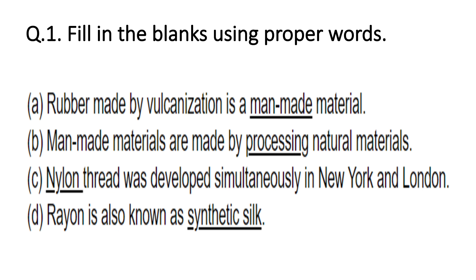The next fill in the blank: rayon is also known as synthetic silk, because rayon thread is very glossy and shiny just like silk which is obtained from nature. That is why it is called synthetic silk, as it is produced by humans.